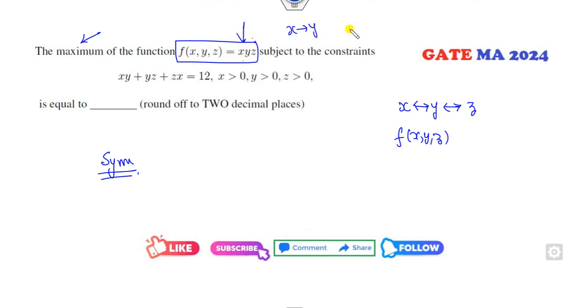Look at the constraint also. Is this function also symmetric? If you replace x to y, y to x, or x to z, y to z, you can see that all the functions remain the same. So what does it mean? It is symmetric.